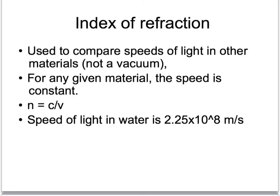Because different materials have different speeds of light, we have a standard way of comparing them called the index of refraction. It's used to compare the speeds of light in materials that are not vacuums. For any given material, the speed is constant.